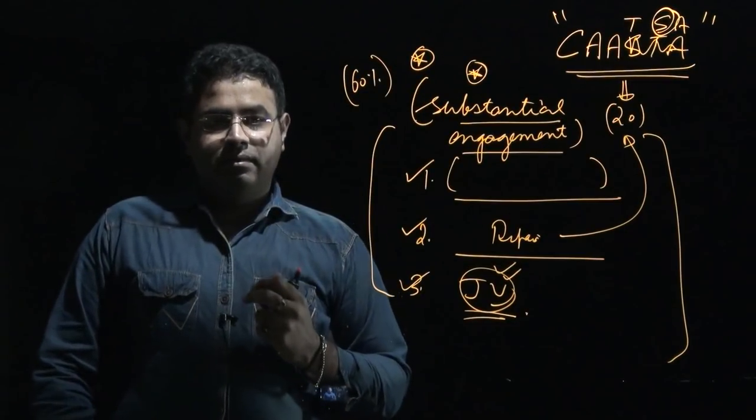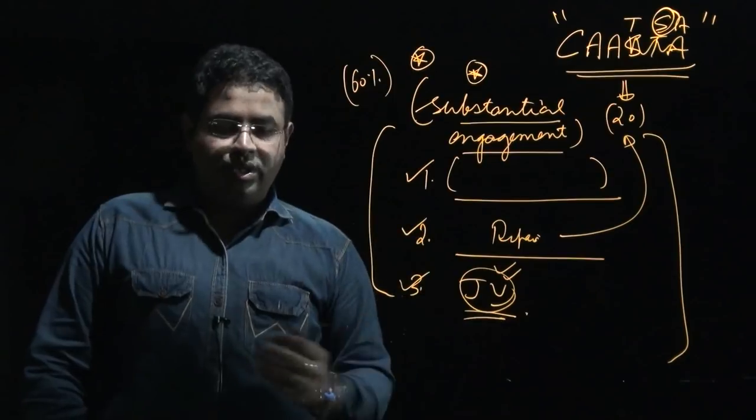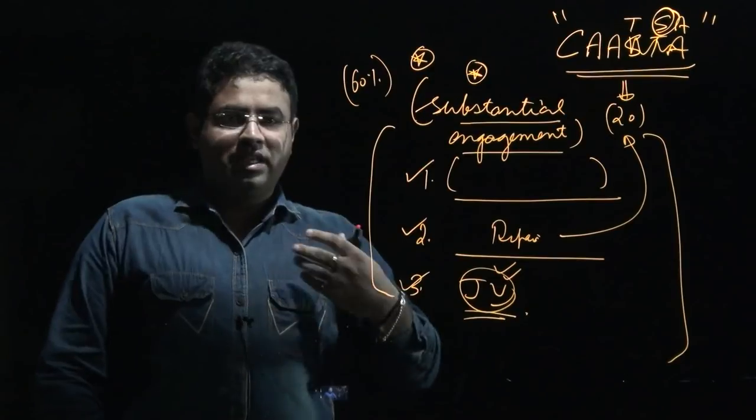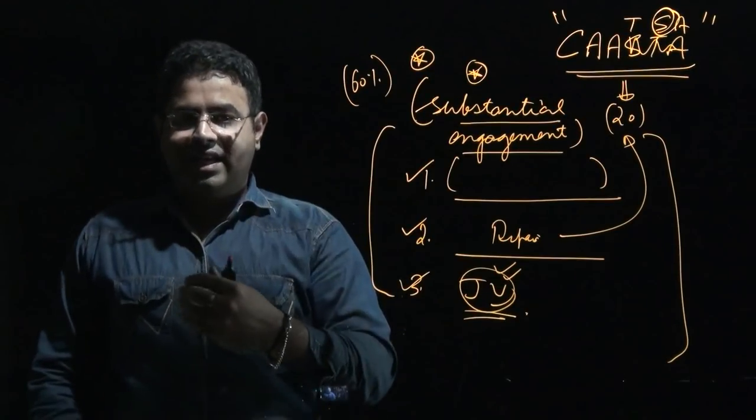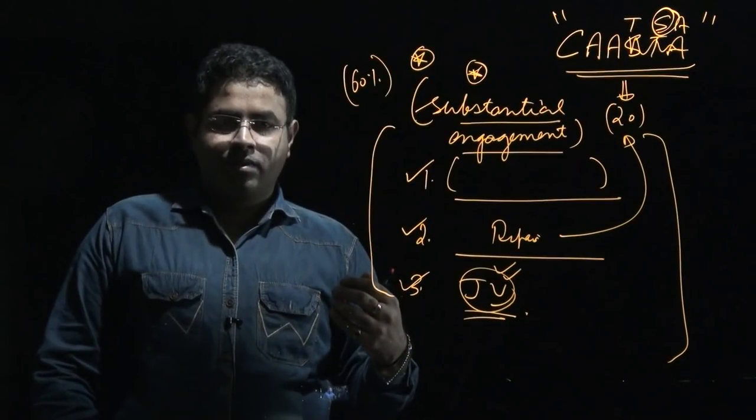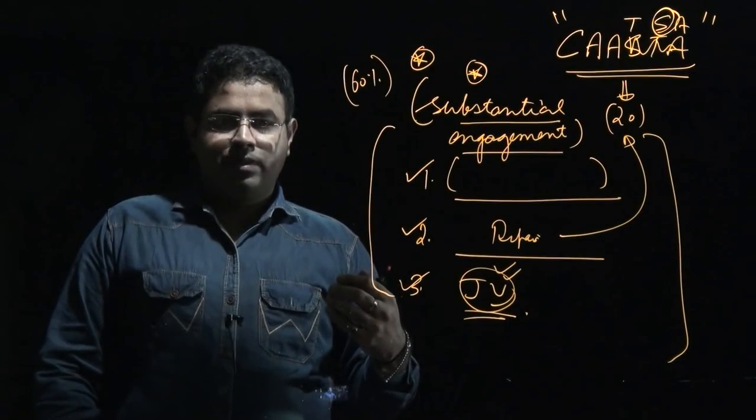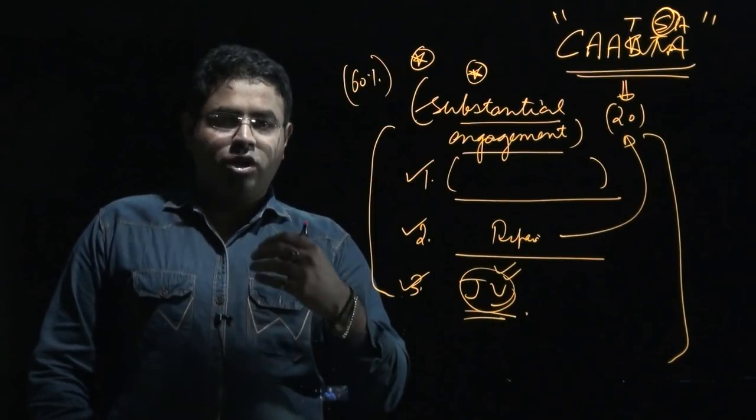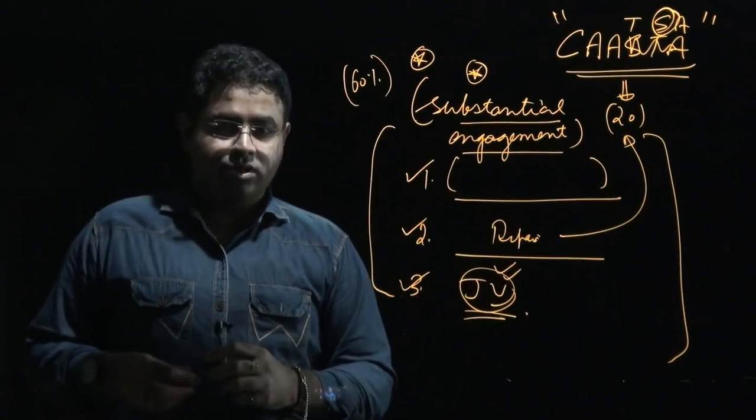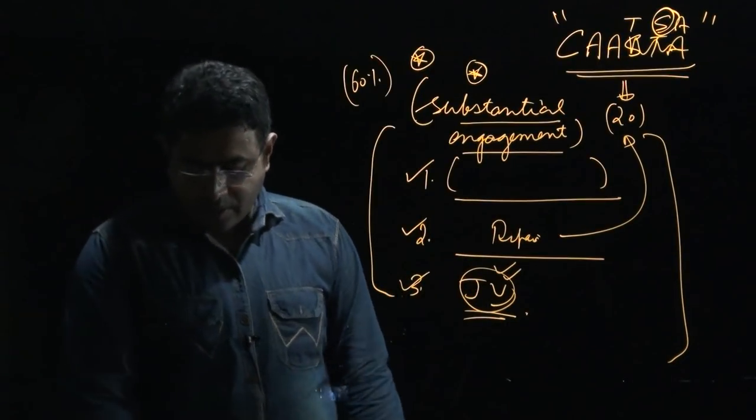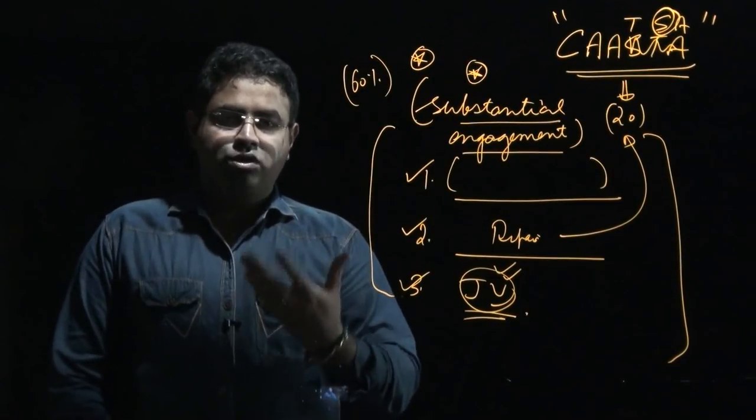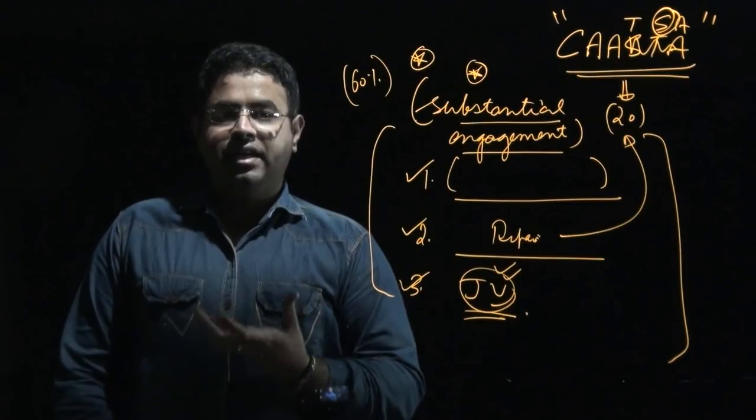So India needs to negotiate with United States of America so that they don't implement CAATSA, because India will have defense engagement with Israel, India will have defense engagement with Japan, with Australia. So the interest of USA should not become the condition for India's engagement with any country because if that will be the case, it will hurt India's sovereignty, and sovereignty is the most prime thing for any nation state.